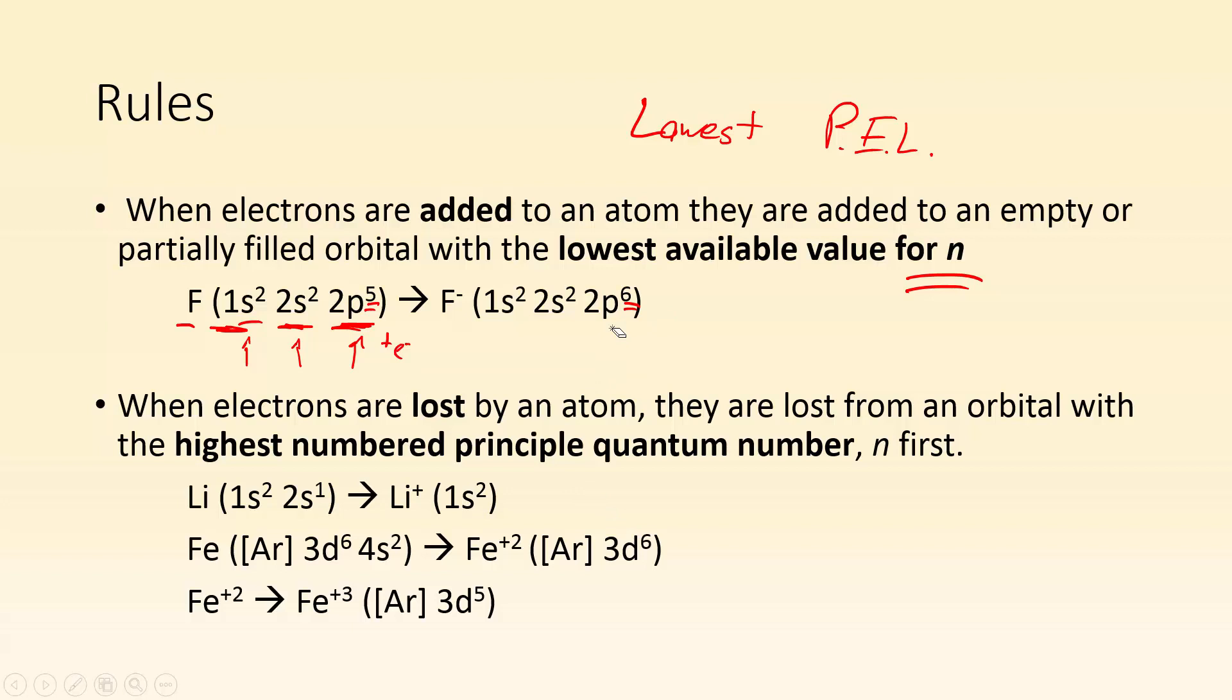Now, when electrons are lost by an atom, they are lost from an orbital with the highest numbered principal quantum number, or the highest n first.